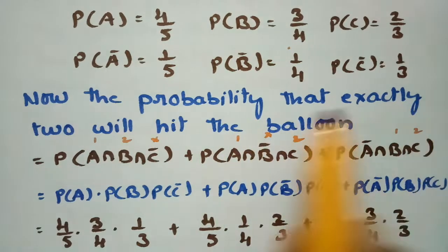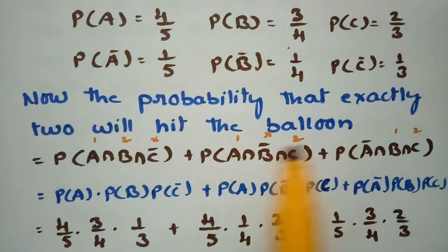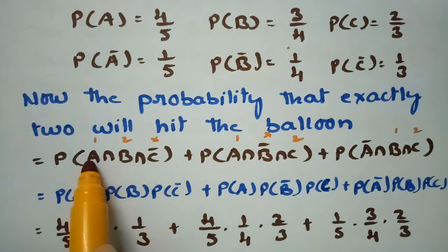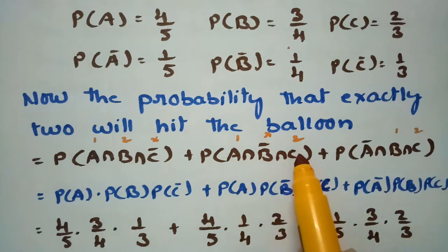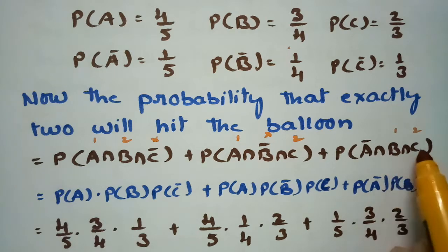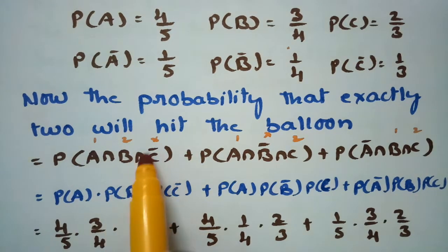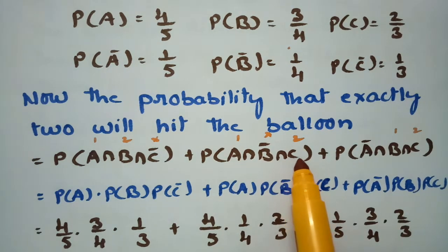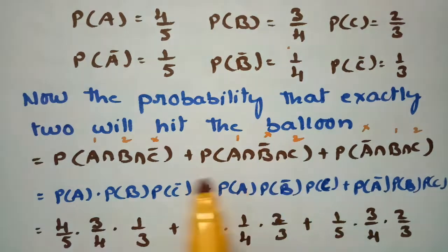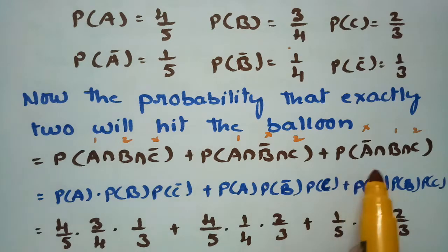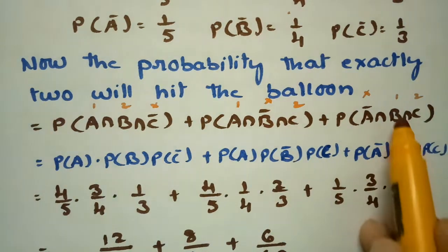The probability that exactly 2 will hit the balloon covers three cases: A hits, B hits, C fails — giving A∩B∩C̅; A hits, C hits, B fails — giving A∩B̅∩C; and A fails, B and C hit — giving A̅∩B∩C. Since the events are independent, these become P(A)·P(B)·P(C̅), plus P(A)·P(B̅)·P(C), plus P(A̅)·P(B)·P(C).